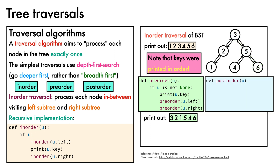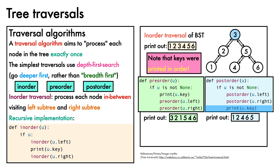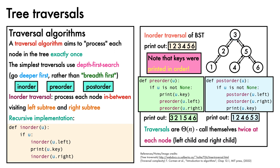Finally, a post-order implementation also follows a similar structure, starting with a check that the node is not none. This time, we call postorder on the left child, then on the right child, then finally process the node itself. Again, the traversal will visit nodes in depth first order, but will print the keys in a different order to either in-order or pre-order traversal. These traversals are big-Theta of n complexity. You can see that they call themselves exactly twice at each node, once on the left child, and once on the right child.